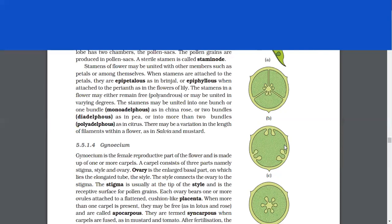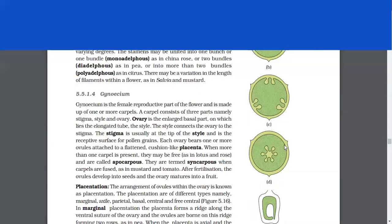The stamens in a flower may either remain free or may be united in various degrees. The stamens may be united into one bunch or one bundle, as in china rose, or two bundles, as in pea, or into more than two bundles, as in citrus. There may be a variation in the length of filaments within a flower, such as salvia and mustard.